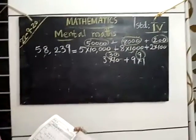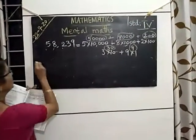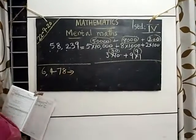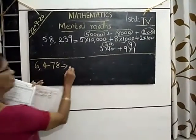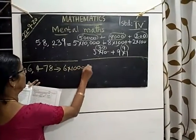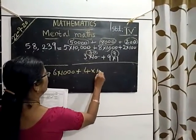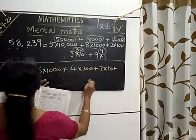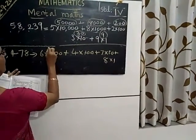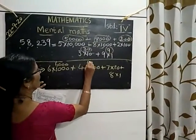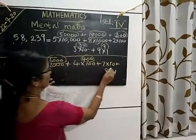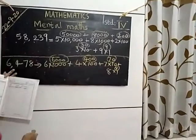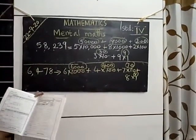The next one, 6,478. How can we write? 1 lakh, 100,000. How many thousands? 6 into 1,000 plus 4 into 100 plus 7 into 10 plus 8 into 1. This is 6,000, this is 400, this is 70, this is 8. You got 6,478.